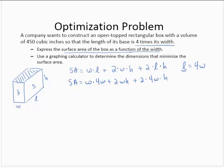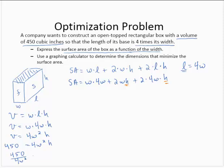Now we're asked to express the surface area of the box as a function of the width, so we need to get rid of those h's. We still have one piece of information we have not used: the volume of 450 cubic inches. So the volume is the width times the length times the height, so the volume is 4w squared h. And since the volume is 450, we have 450 is equal to 4w squared h, and if we divide through by 4w squared, we find that 450 over 4w squared is equal to h.